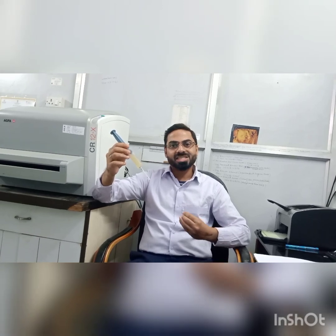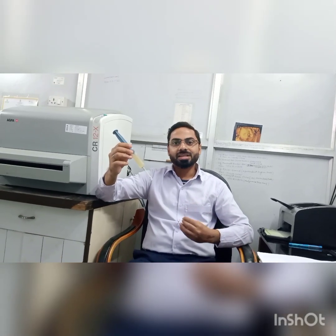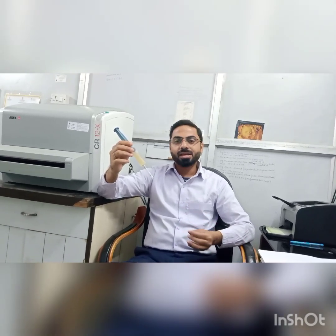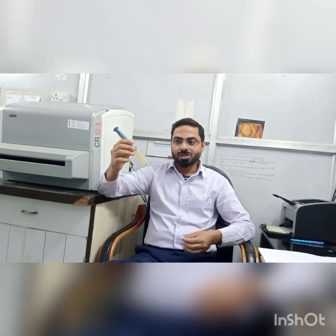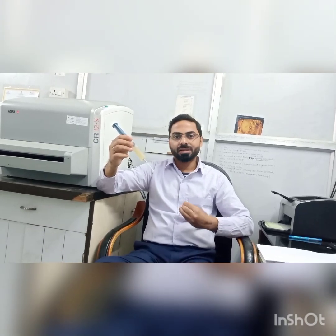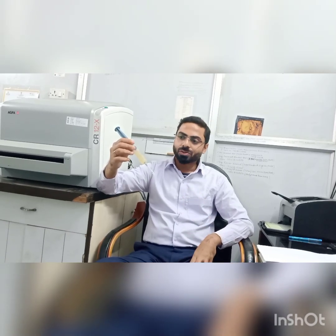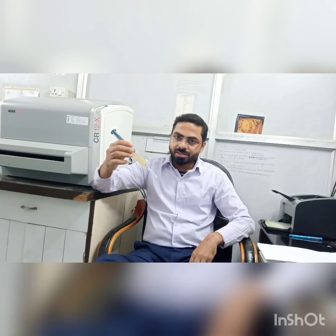Ascites is an overproduction of peritoneal fluid. Peritoneal fluid is normally present in our peritoneal cavity in a small amount, but when it starts increasing it takes the form of ascites. It is a retention of fluid — a fluid overload.